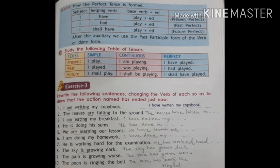Study the following table of tenses — present, past, and future. Simple tense: I play / I played / I shall play. Continuous tense: I am playing / I was playing / I shall be playing. Perfect tense: I have played / I had played / I shall have played.